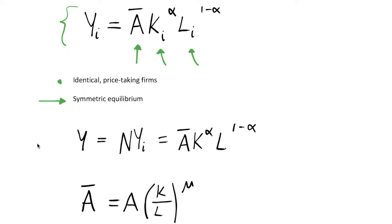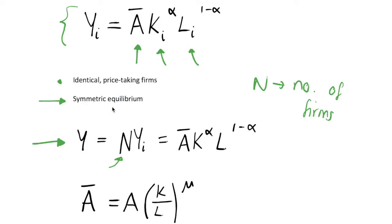Because these are identical firms, we have a symmetric equilibrium, so every firm makes the same decisions about how many workers and how much capital to employ. From this symmetric equilibrium we can write aggregate output — not indexed by i — as equal to N, the number of firms, multiplied by the output of an individual firm. This equals A-bar multiplied by the capital stock and labor raised to the power of their income shares, just the individual production function aggregated.